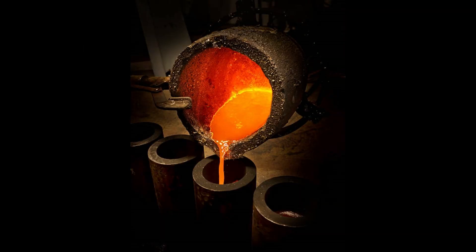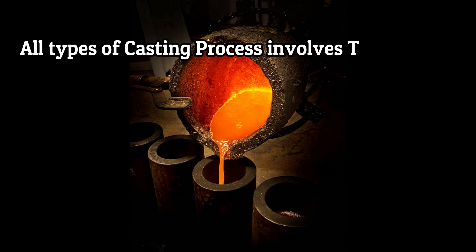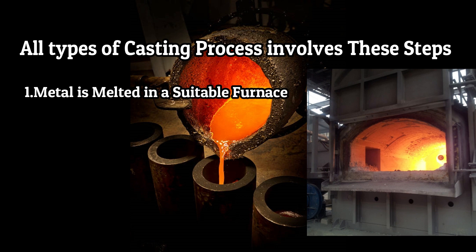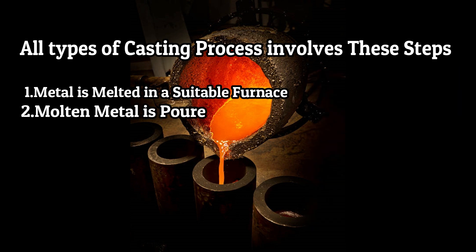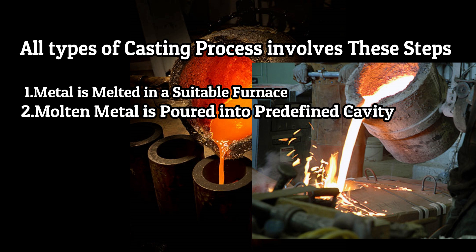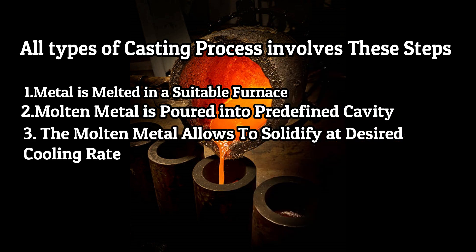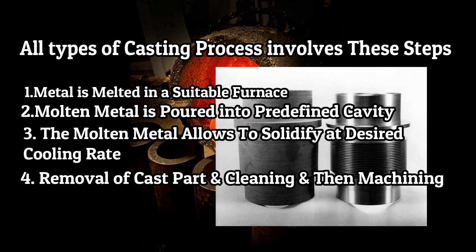There are many types of casting which work differently, but all these processes involve the following steps. First, metal is melted in a suitable furnace. Now molten metal is poured into a predefined cavity. The molten metal is allowed to solidify at the desired cooling rate. Then removal of the cast part from the mold and clean it for further processes like machining, surface finishing, polishing etc.